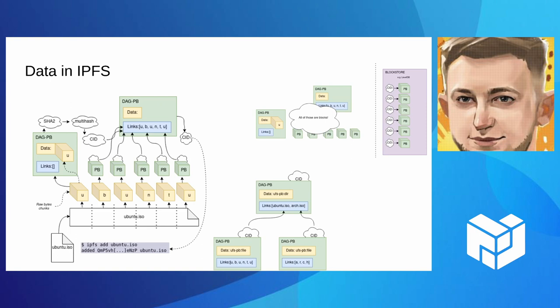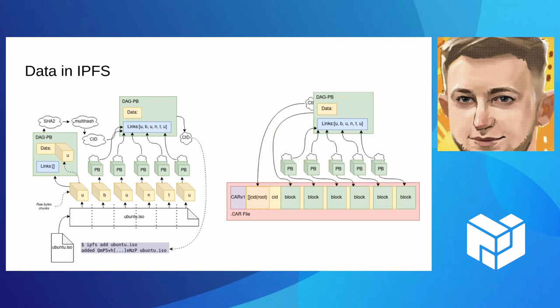For directories, we just get another DAG protobuf object per directory — unless the directory is really large, in which case you get HAMTs, but that doesn't really matter here. We put those objects into what we call a block store, which is just a glorified key-value store mapping CIDs to the actual block data. We can also put those DAGs into what we call CAR files, which is just a way to store an IPLD graph or a DAG on disk in a file.